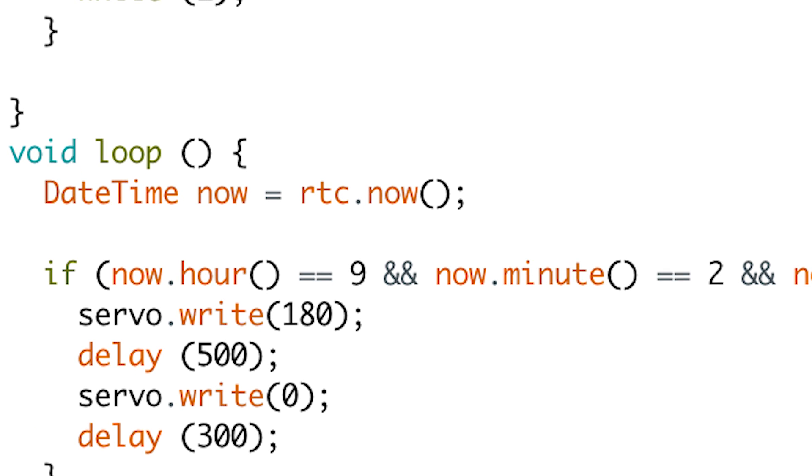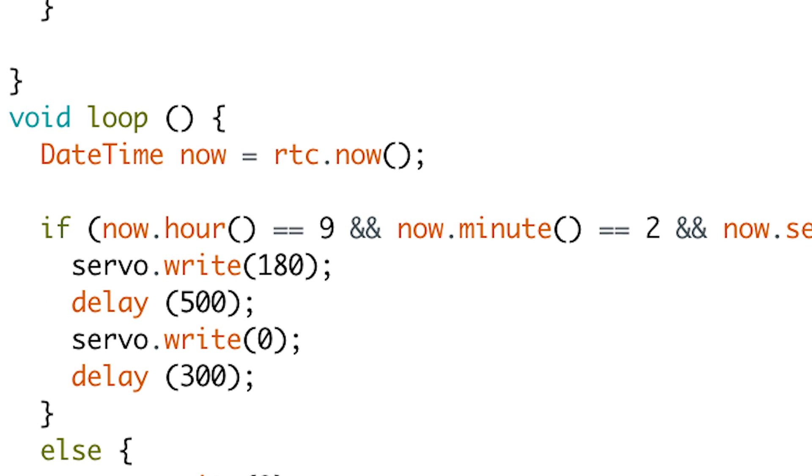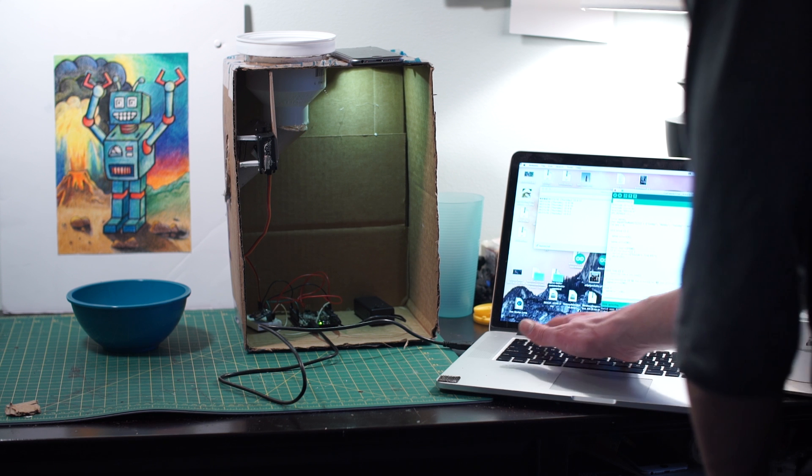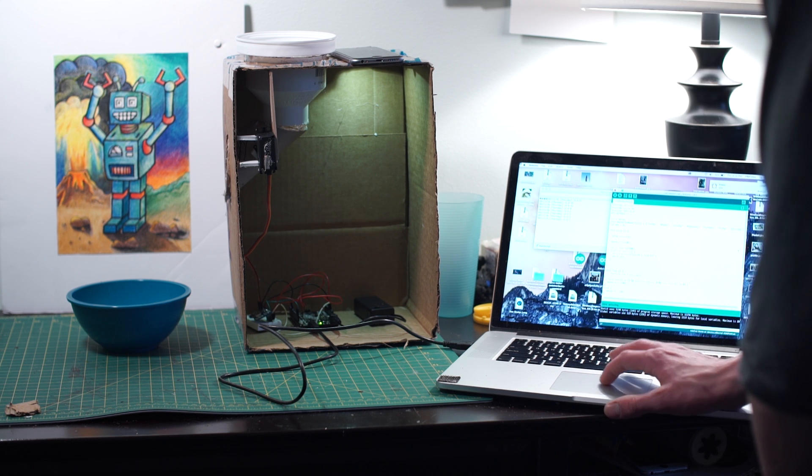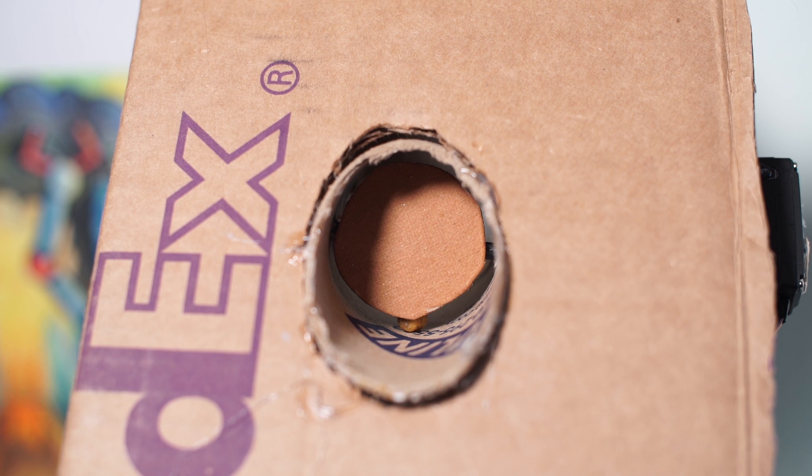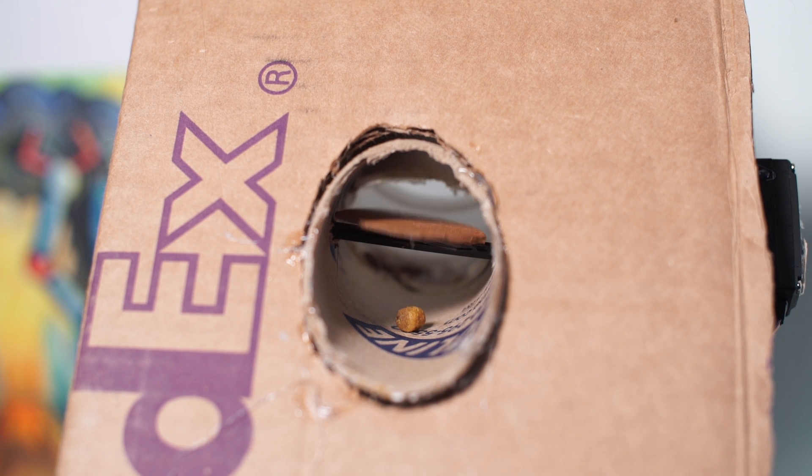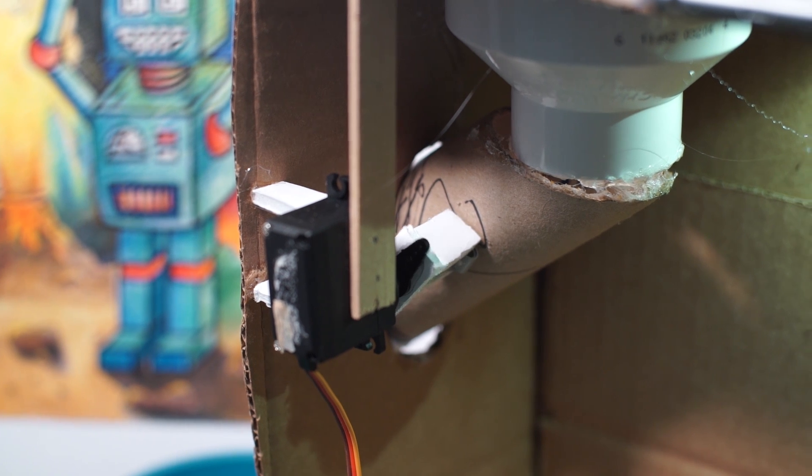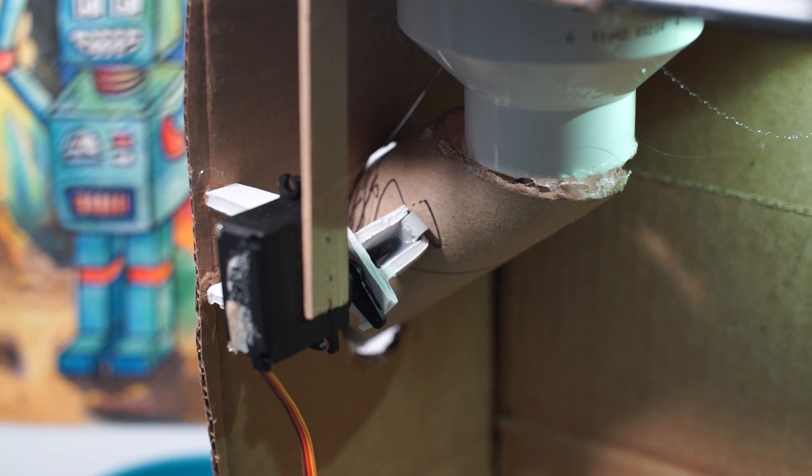The next section is the loop section. This is the action that will repeat itself until the code is overwritten or reset. And that's it. Once that's finished, I built a prototype using cardboard and created a mechanism that works like a revolving door to dispense food. The servo rotates 90 degrees to allow food to pass for half a second and then reverts back to its initial position.